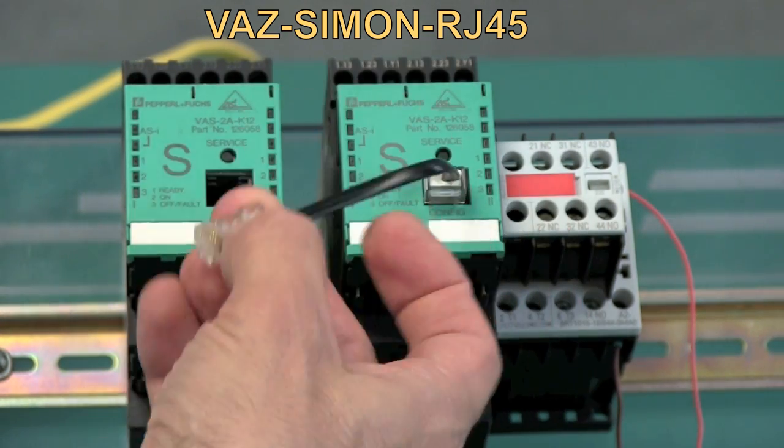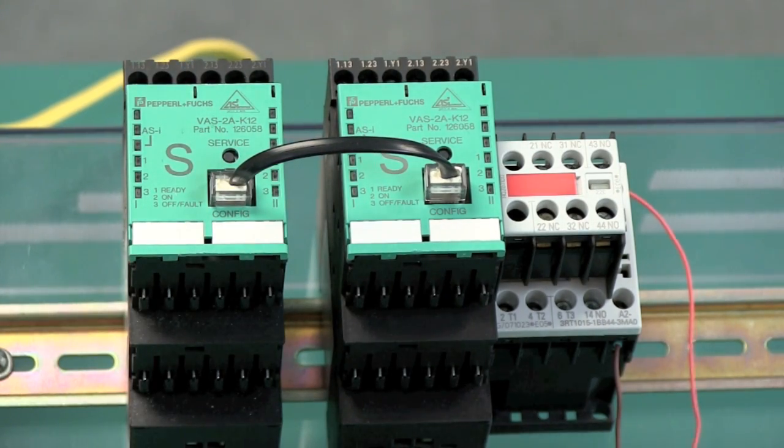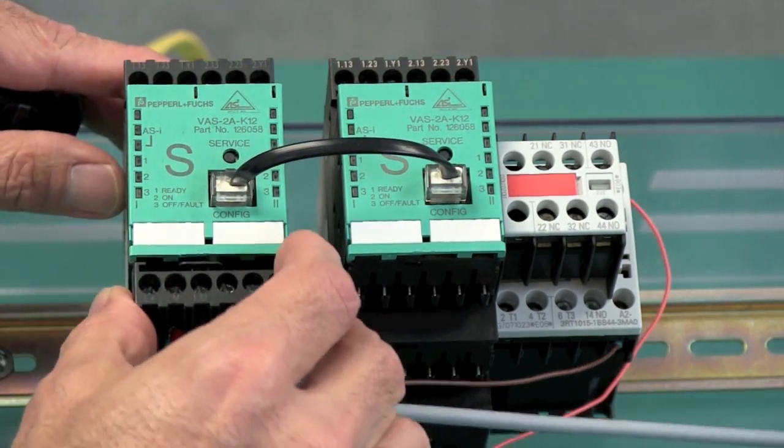Connect the failed to the replacement unit before you apply power. Now all you got to do is apply power.